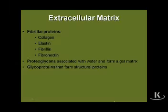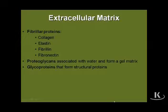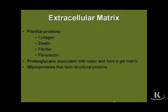What makes up the extracellular matrix of connective tissue? It's a combination of a gel-like matrix associated with proteoglycans and glycoproteins, and a fibrillar makeup that consists of collagen mainly, but also elastin, fibrillin, and fibronectin.